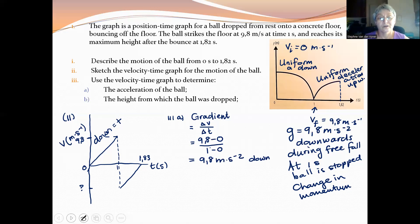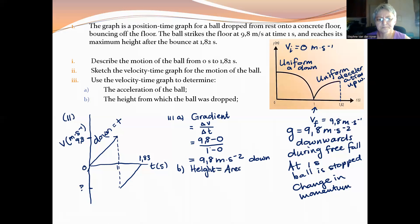The next question asks us to calculate the height from which the ball was dropped. To calculate height from a velocity-time graph, we need the area between the line and the time axis. So the height would be equal to the area. This is only for the downward motion, not the upward motion. So it is a half times 1 times 9.8, which is 4.9 meters.